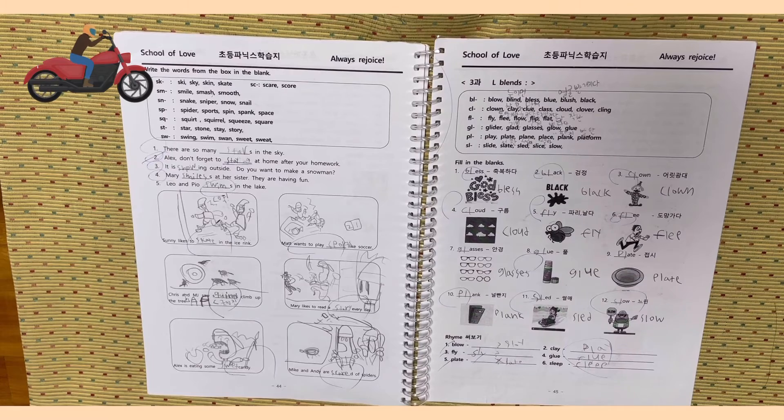No. 5, Leo and Piwa swims in the lake. Sunny likes to skate in the ice rink. Matt wants to play sports like soccer.